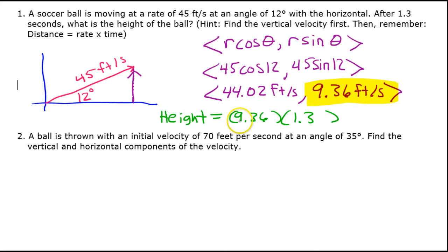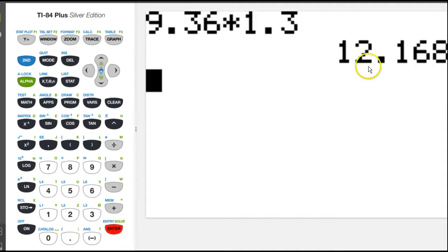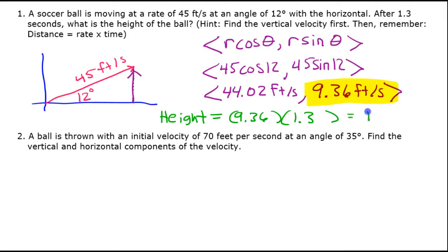So if I multiply the rate times the time, that should give me the distance or the height in this case. So that's 12.17 feet. That's the answer for number one.